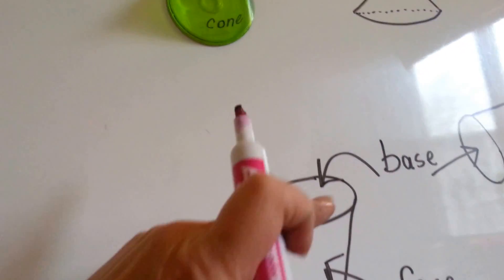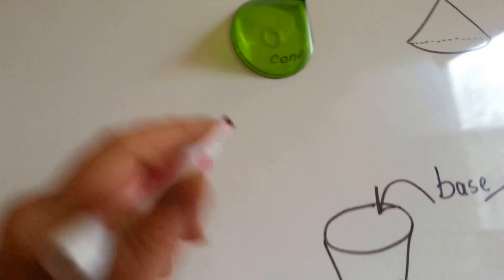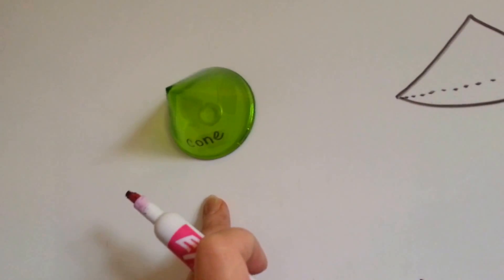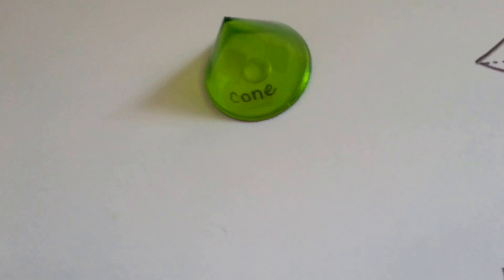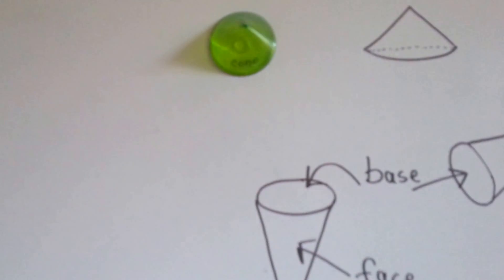And its base, the round, flat, circular part, is stuck to the board. See? That's the cone. See how it's got a point to it? It's like an ice cream cone stuck to my board.